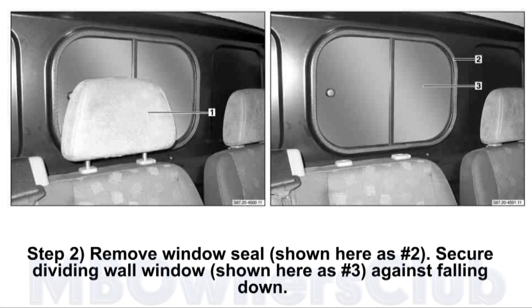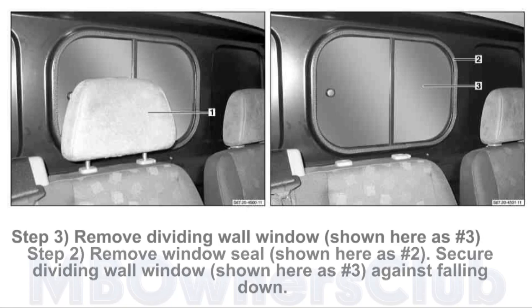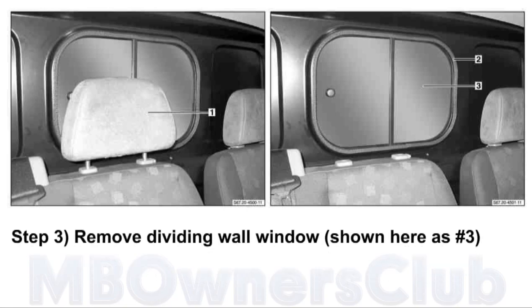Secure dividing wall window, shown here as number 3, against falling down. Step 3: remove dividing wall window, shown here as number 3.